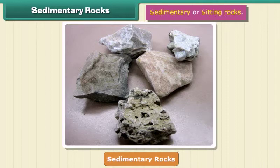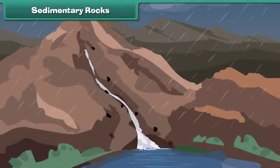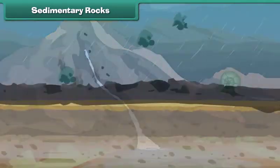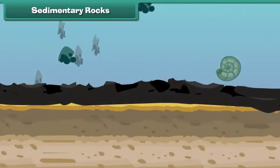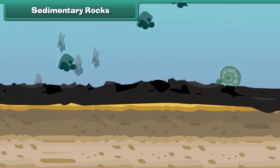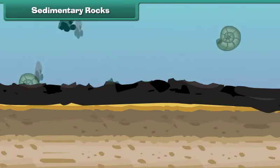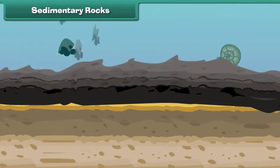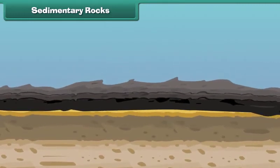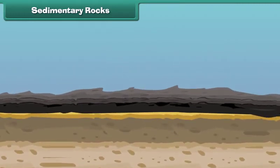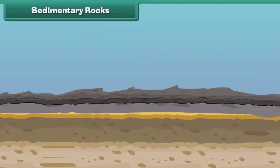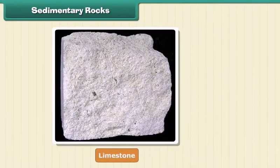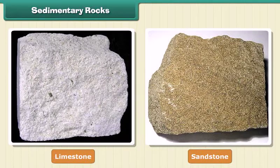The second type of rock is sedimentary rock, also called sitting rocks. Rocks roll down, crack, and hit each other, then are broken down into small particles called sediments. The sediments are transported and deposited by wind, water, etc. These loose sediments are compressed and hardened to form layers of rocks called sedimentary rocks. Limestone and sandstone are examples of sedimentary rock.